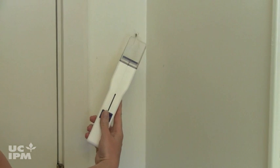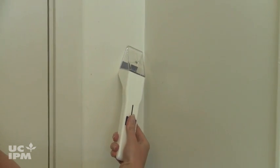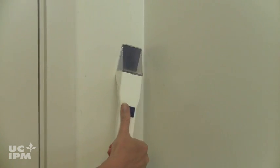Place the catcher over the spider, squeeze the trigger or slide the tab closed, then take it outside and let it go.